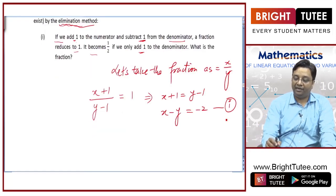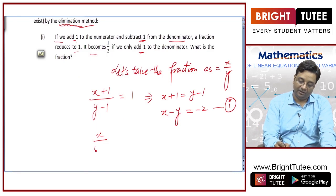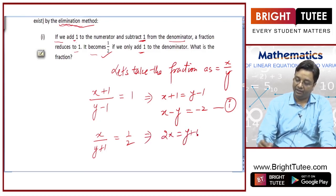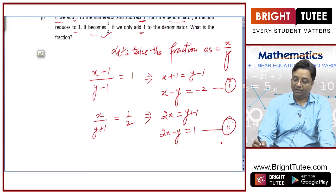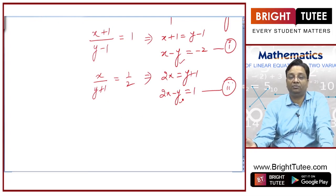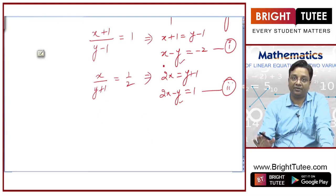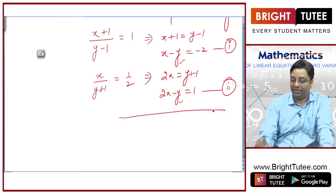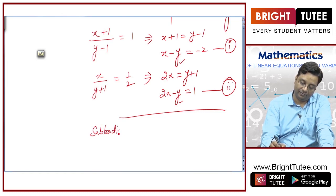Second condition: if we only add 1 to the denominator, x by y plus 1 equals 1 by 2. Hence 2x is equal to y plus 1, so 2x minus y is equal to 1, and this is our equation number 2. Now, you see that coefficients of y are already equal, so you do not have to make any extra effort to equate them. You can directly subtract equation 1 from equation 2.